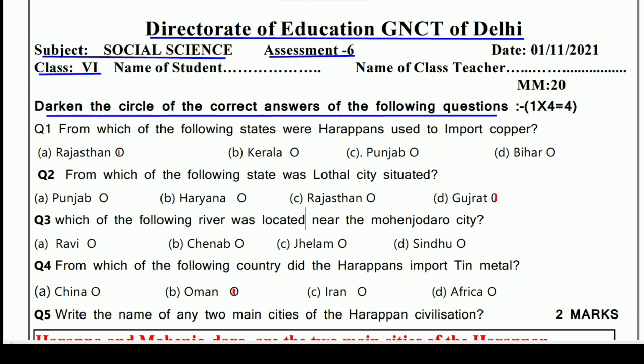Darken the circle of the correct answer for the following questions. There are 4 multiple choice questions — choose the right option and darken the circle. First question: From which of the following states did Harappans import copper? Options are Rajasthan, Kerala, Punjab, and Bihar. The correct answer is Rajasthan.